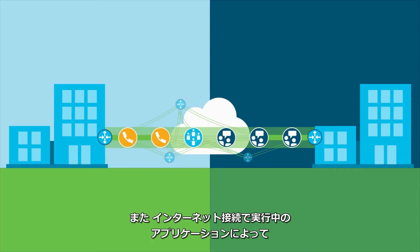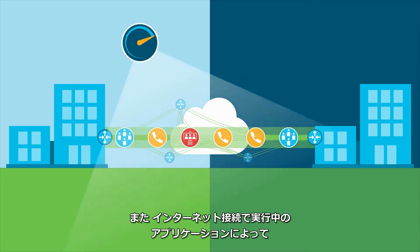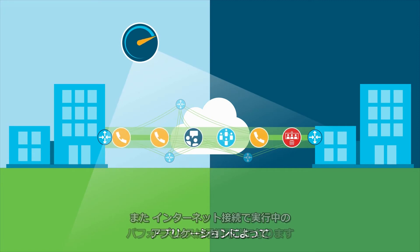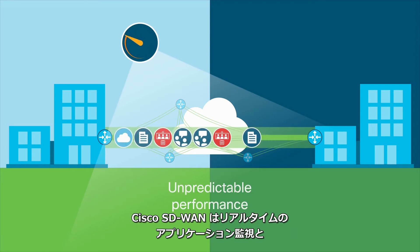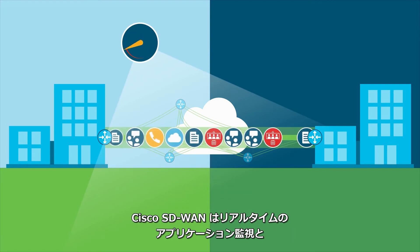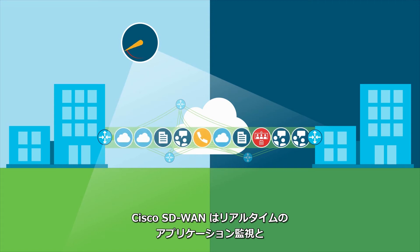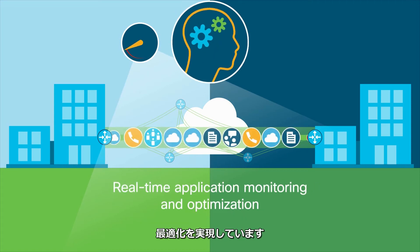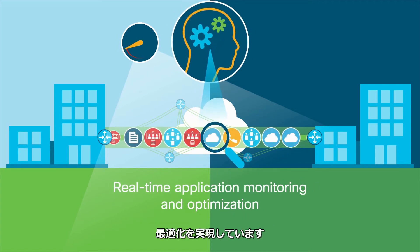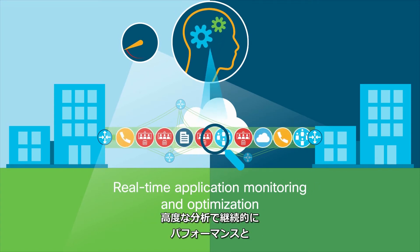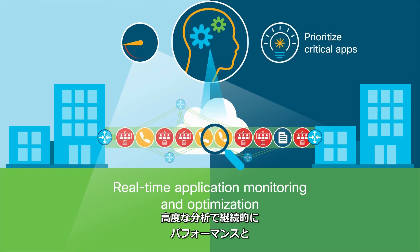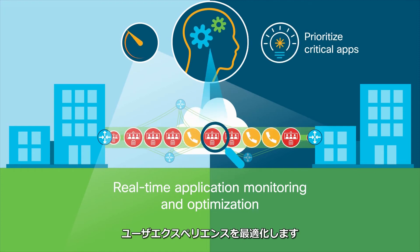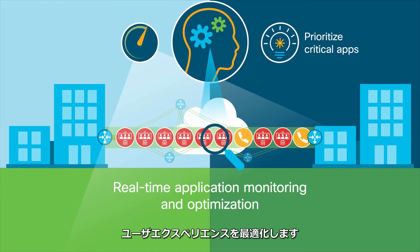Cisco also knows running applications over internet connections can make performance unpredictable. That's why Cisco SD-WAN integrates real-time application monitoring and optimization, using advanced analytics to continuously optimize performance and the user experience.